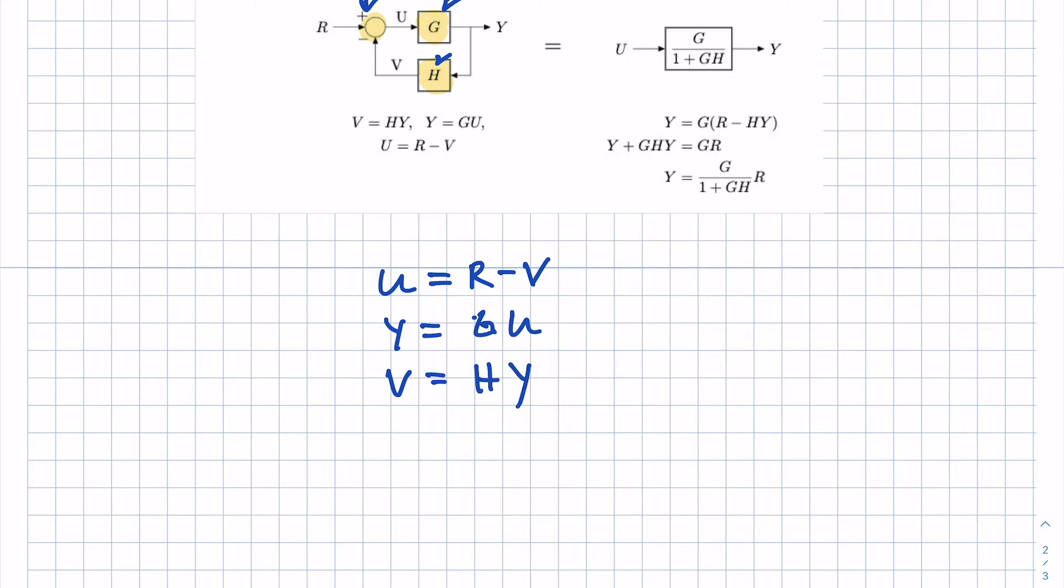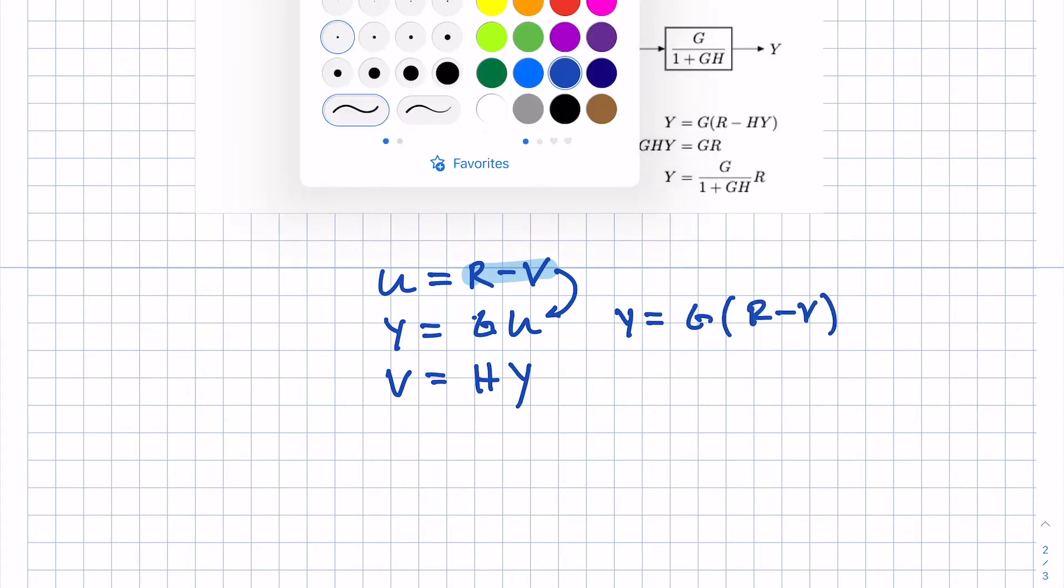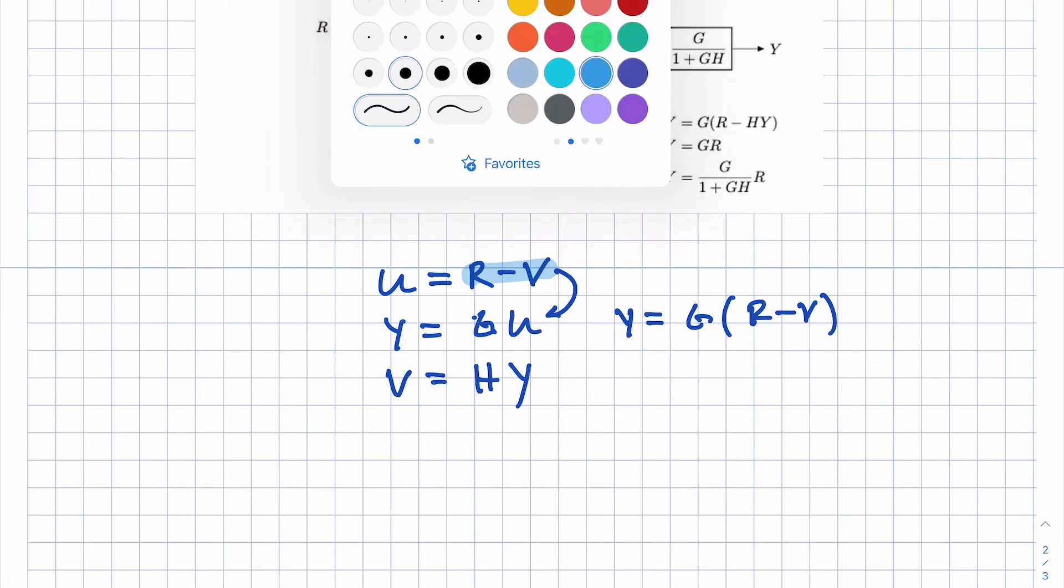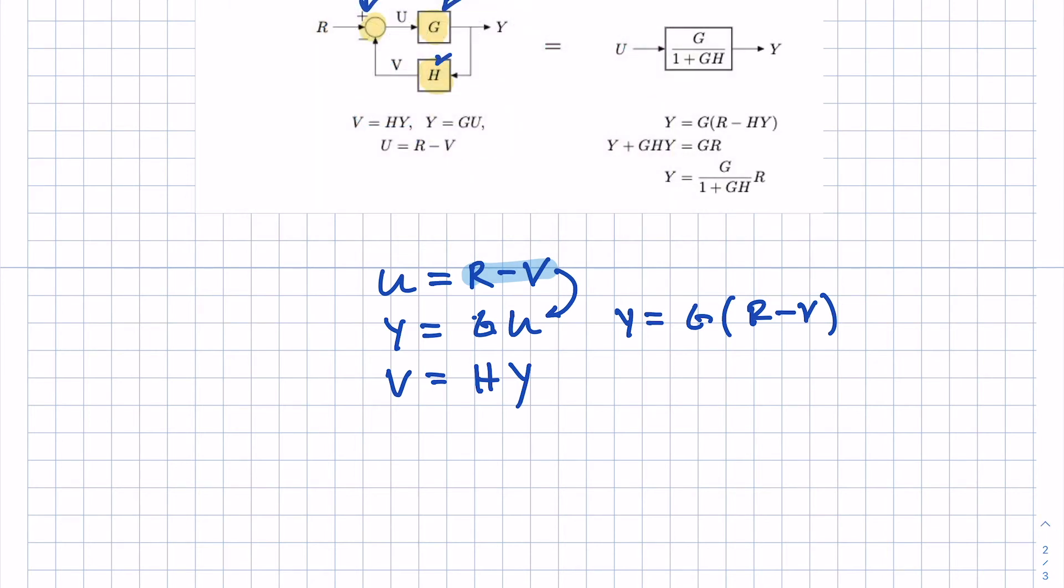So now I have three equations and I can start back-substituting things. This R minus V is equal to U. So I could substitute that in and I would get that Y is equal to G times R minus V. Then I find another substitution where I see V is equal to H Y.